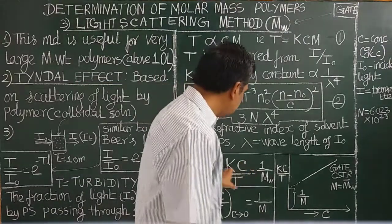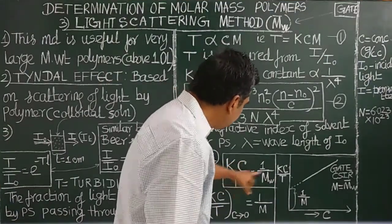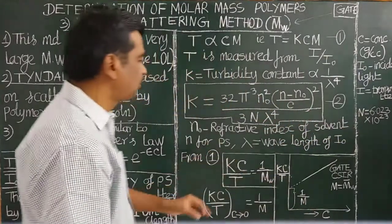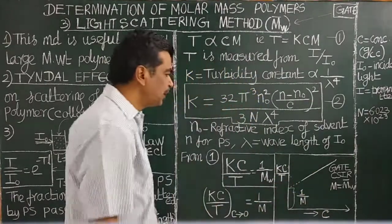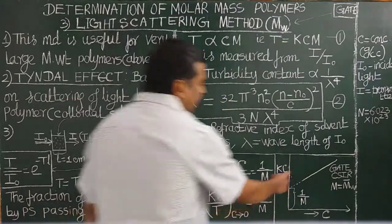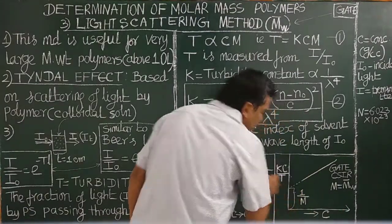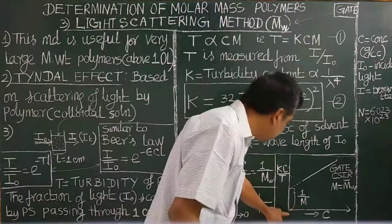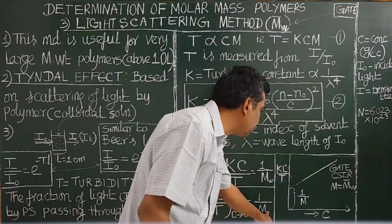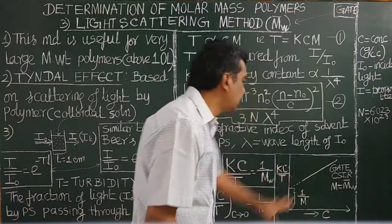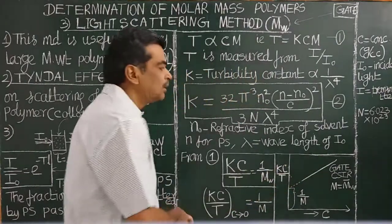This is a straight-line equation. A graph between Kc/T versus concentration is plotted. A straight line is obtained, which is extrapolated to zero concentration. At zero concentration, Kc/T equals 1/Mw, where Mw is the weight-average molar mass. From the intercept of this graph, the molar mass of the polymer can be calculated.